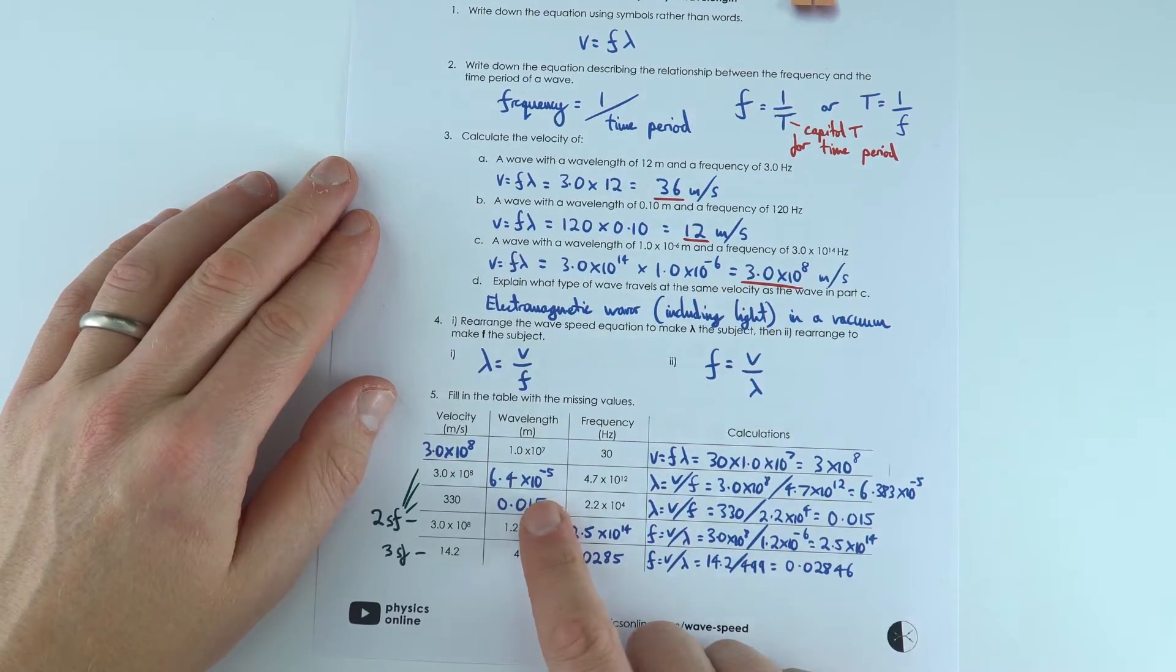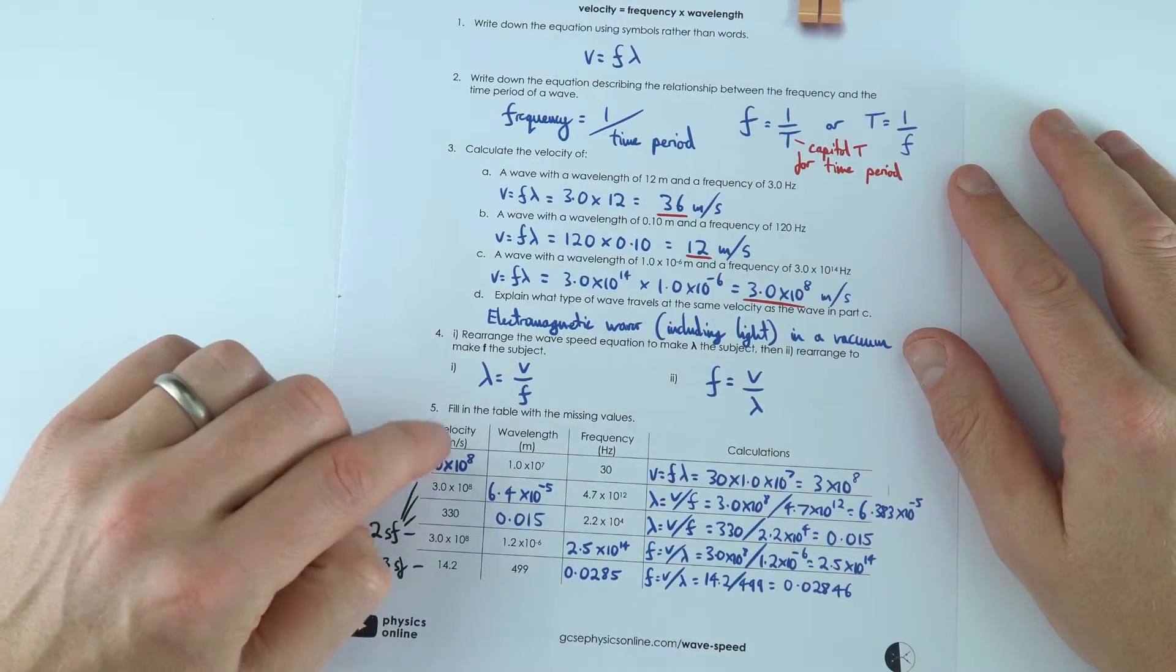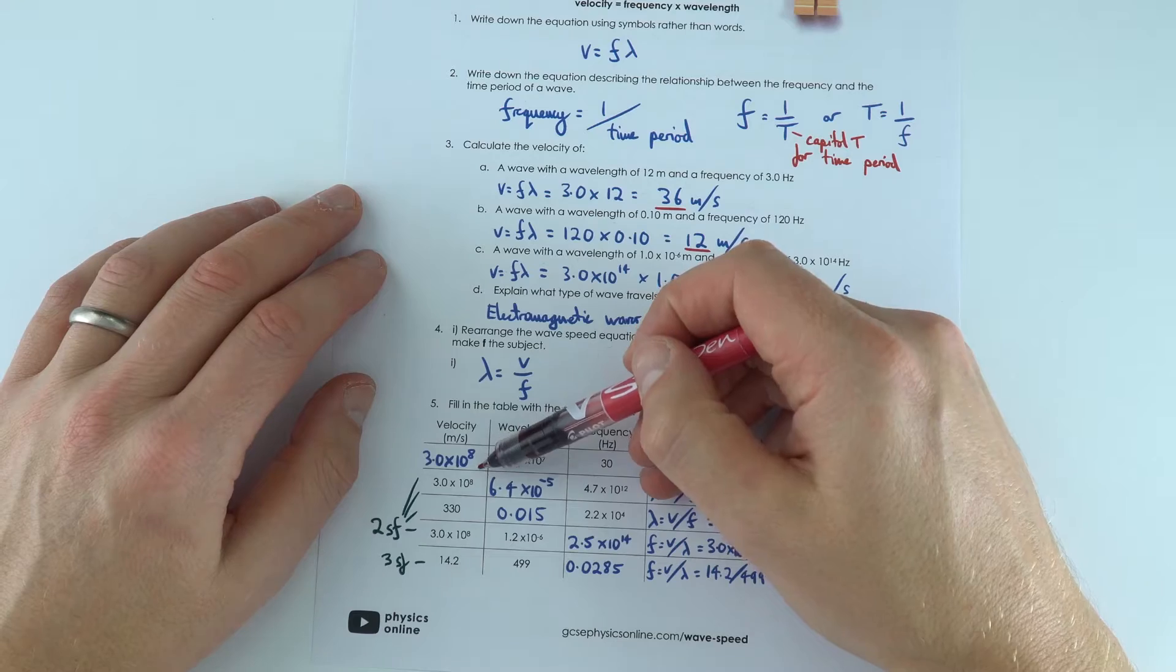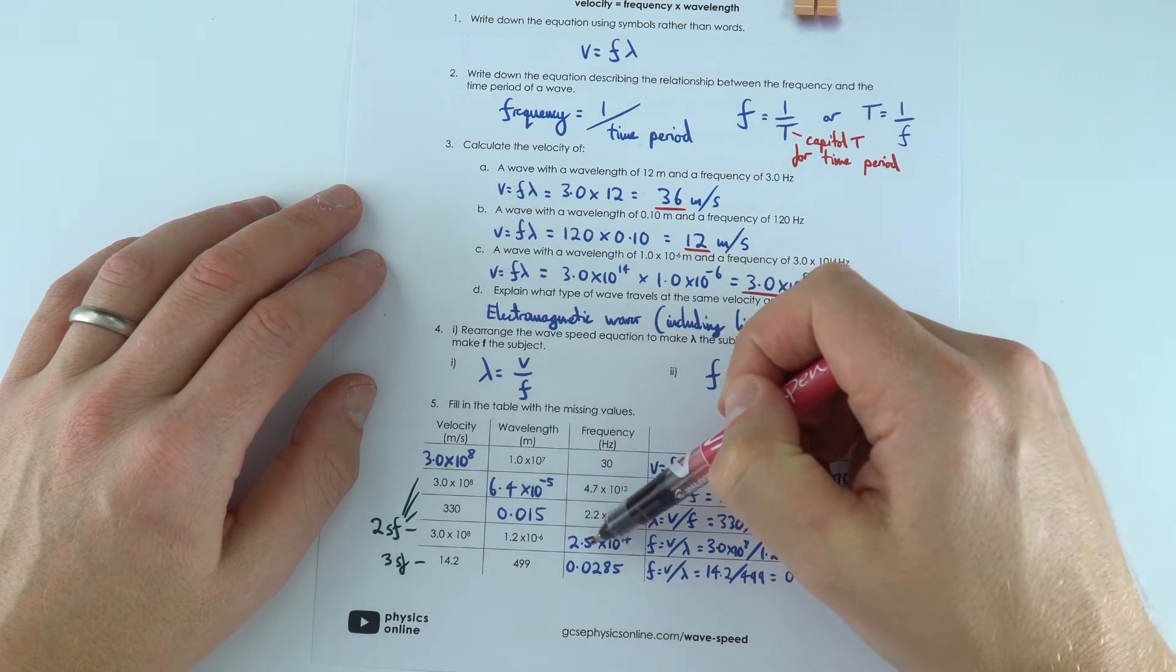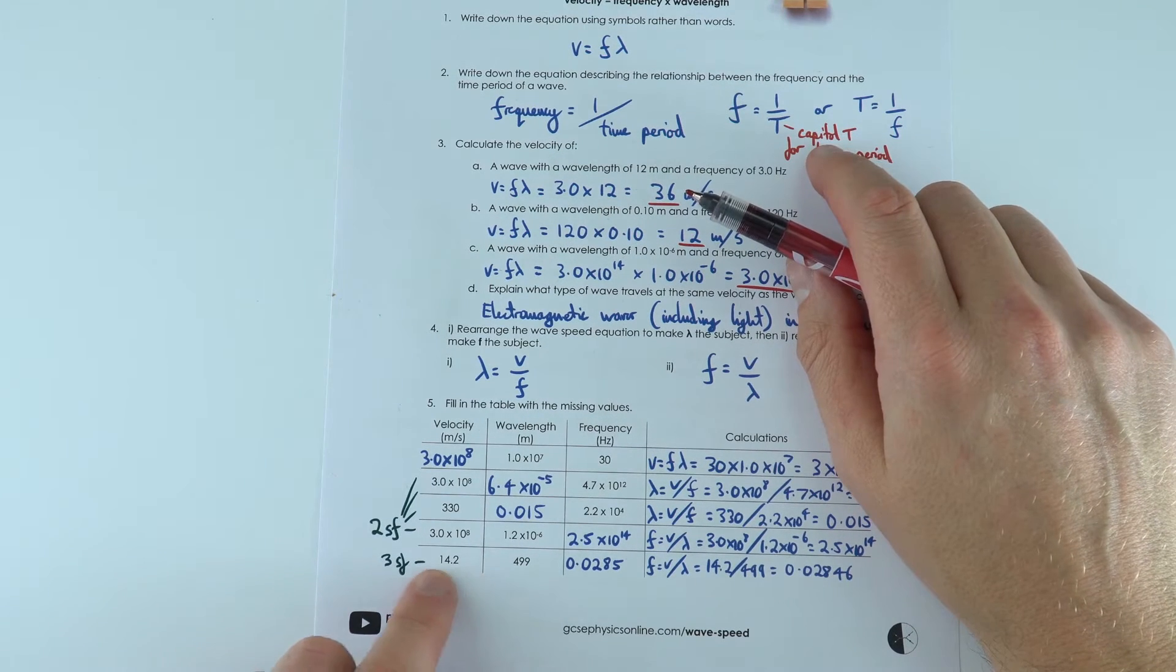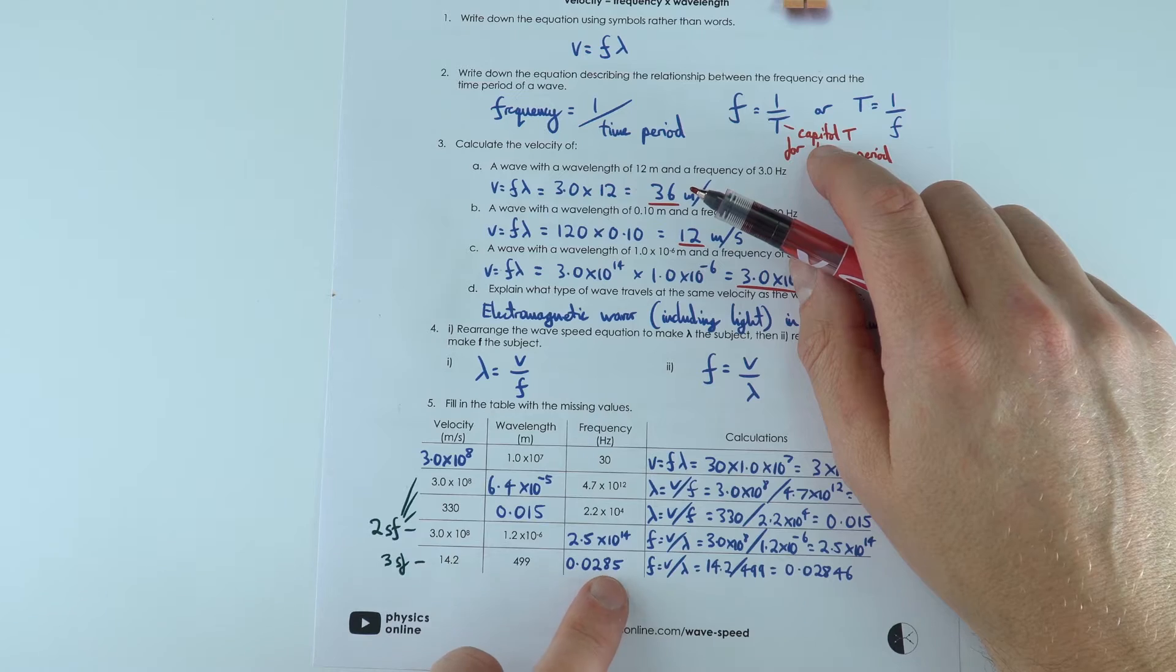For the table here we used either this, this, or this equation to work out the velocity, wavelength, or frequency. Note as well that for the first four answers we used two significant figures like the data here. For the last one though we had three significant figures, which is why I gave my final answer to three significant figures as well.